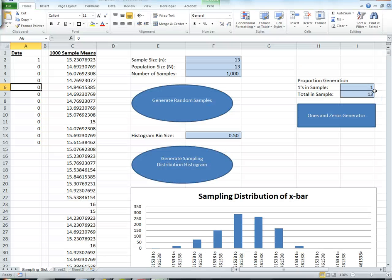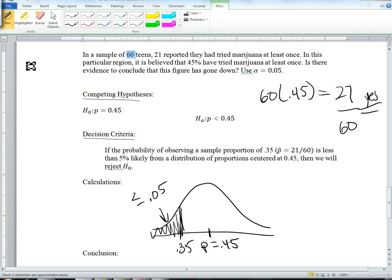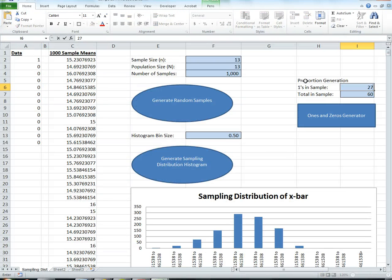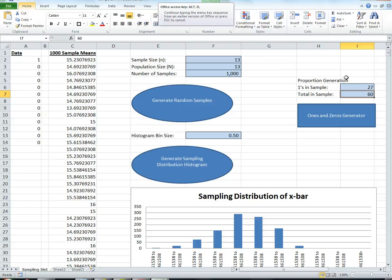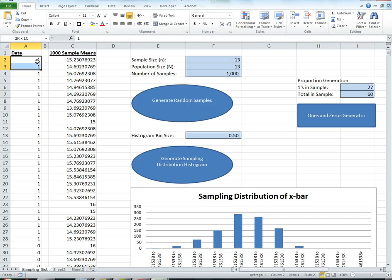So what I'm going to do is have 27 ones and then the remainder, which would be 33 zeros. I actually have a little simple calculator here. We have a total sample size of 60, and of those 60, 27 of them have reported that yes, they have done marijuana. This is hypothetically if the true sample proportion was 0.45, and I'm going to press my 1s and 0s generator, and that generates a total of 27 ones and then 33 zeros.